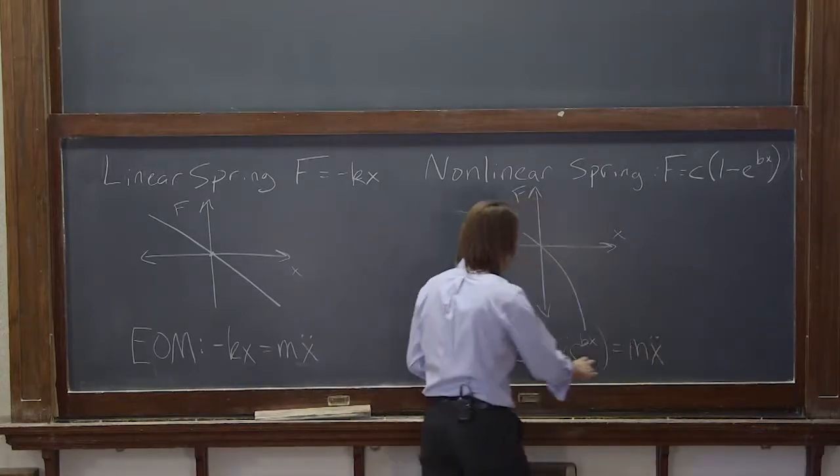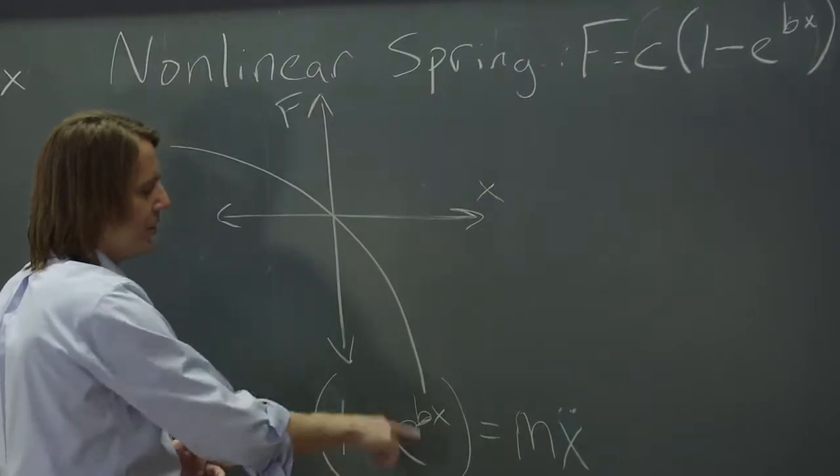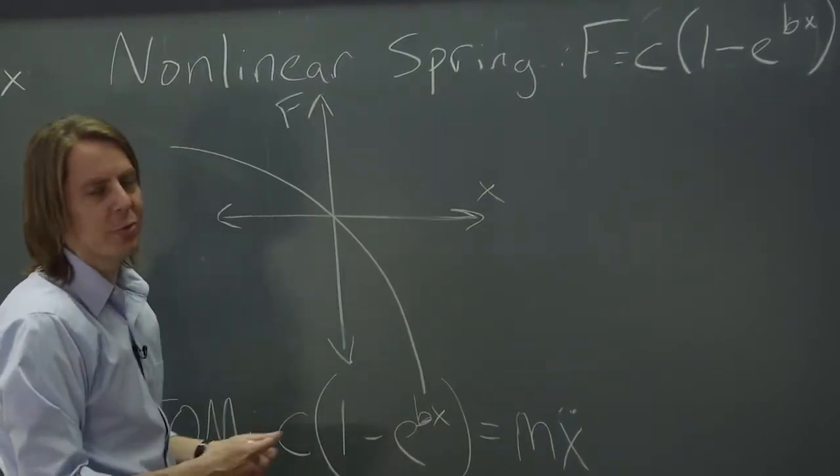Here, we have a nonlinear equation of motion. X double dot is linear, but here we have x, and it's under an exponential, e to the x. So that's what makes it nonlinear.